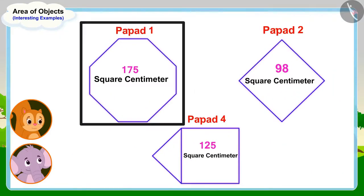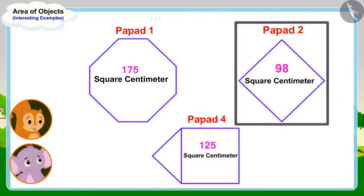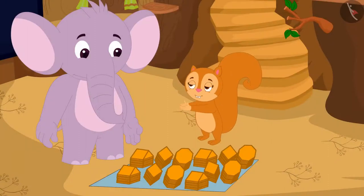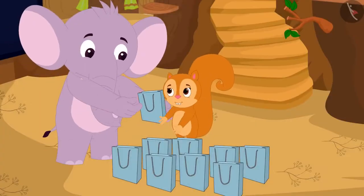Look Appu, first papar has the largest area. It means this papar is the largest. And second papar has the smallest area. It means this papar is the smallest. Chanda excitedly told Appu. Chanda thanked Appu for teaching her about area and then with his help packed all her papas.